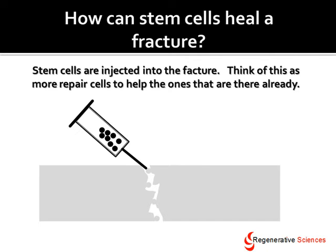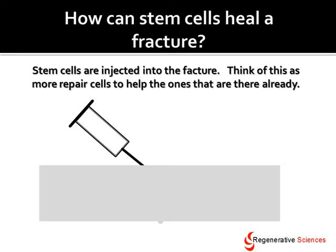How can stem cells heal a fracture? Stem cells are injected into the fracture — think of this as more repair cells to help the ones that are already there. It's nothing more than putting more soldiers on the ground or more repairmen in the field to try to get the job done. These cells are injected into the site, they turn into bone-producing cells, and then enough bone is produced to get the site to heal. This can be done via an injection.